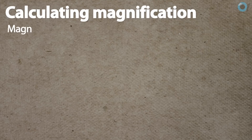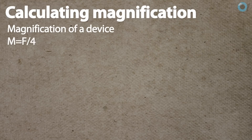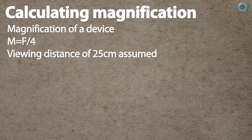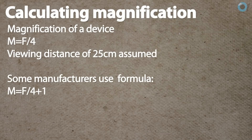We work out magnification based on a plus 4 lens giving unit magnification at 25 centimetres. The magnification of a device is considered to be F over 4, where F is the power in diopters, assuming a viewing distance of 25 centimetres. It should be noted that some manufacturers mark their devices using the formula F over 4 plus 1, which can be confusing, and so we tend simply to refer to the dioptric values.